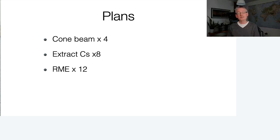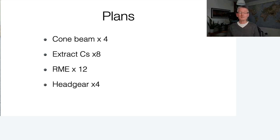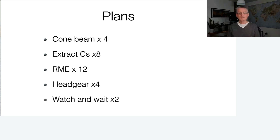Twelve respondents recommended RME, though you cannot determine whether someone needs expansion from a two-dimensional panoramic radiograph alone. Several went for headgear to make space — there's nothing inherently wrong with that concept, though the research on distalizing teeth to make space for impacted canines hasn't really stood the test of time; extraction of primary canines is probably the best treatment. Several went for watch and wait. You can see a great amount of disparity in treatment plans arising from one panoramic radiograph.